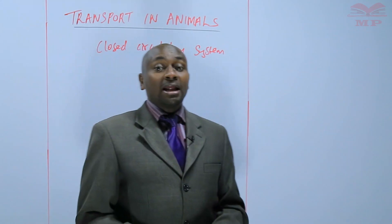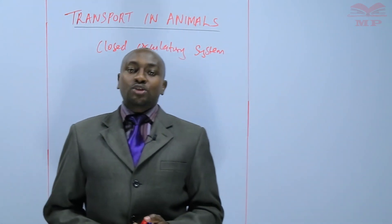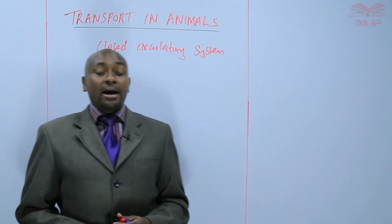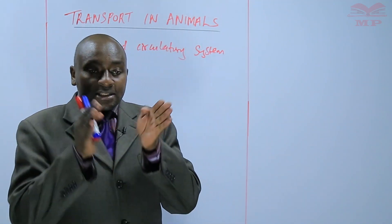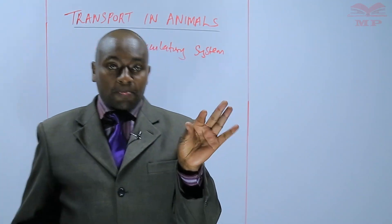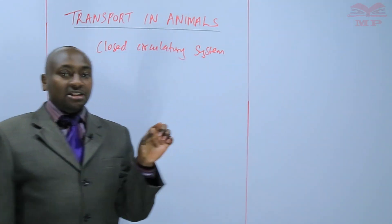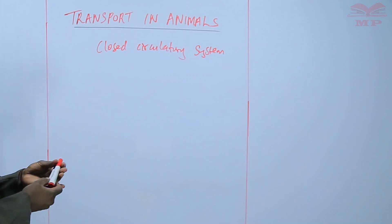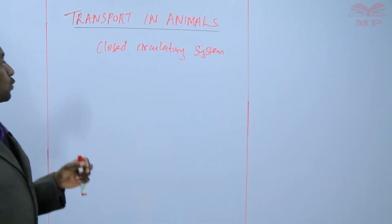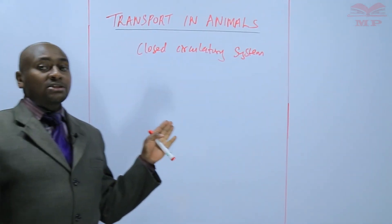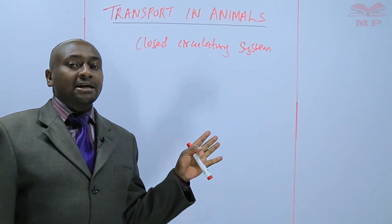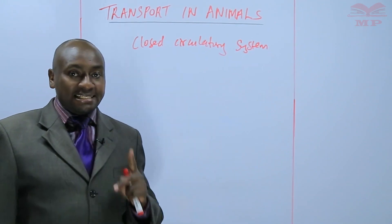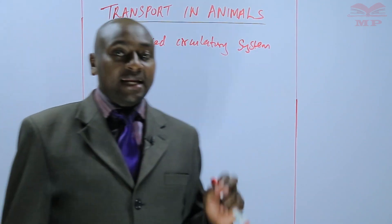Also, this blood is not in direct contact with the tissues, because it is within a restricted enclosure. The closed circulatory system is commonly found in vertebrates and annelids.